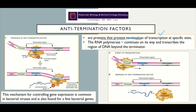Transcription is the production of an mRNA molecule from a DNA antisense strand. These proteins are able to prevent termination of transcription at specific sites, so the RNA polymerase continues on its way and transcribes the region of DNA beyond the terminator.